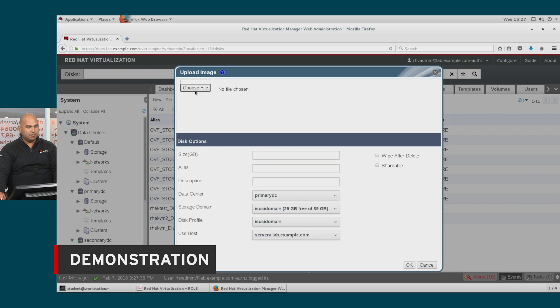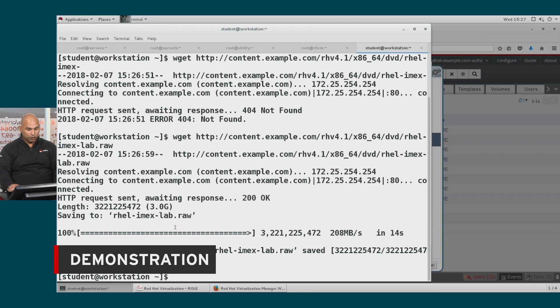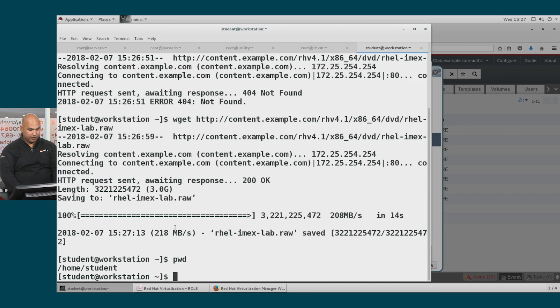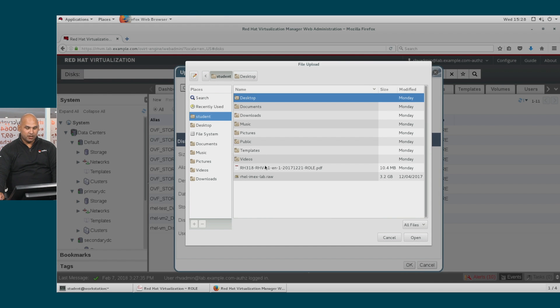We simply go ahead and browse to the location where we downloaded that particular file. I downloaded it to my home directory, which is home students. Let's go to that location and there we'll find RHEL iMixedLab RAW.